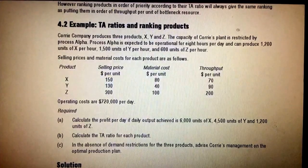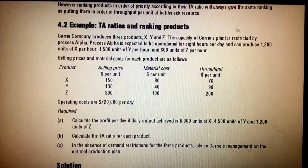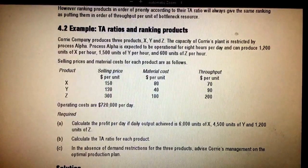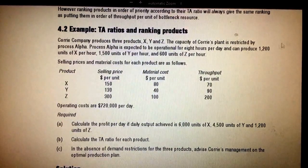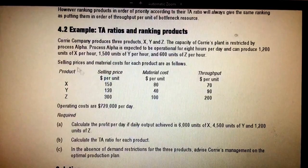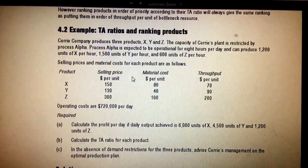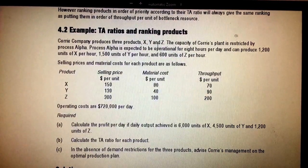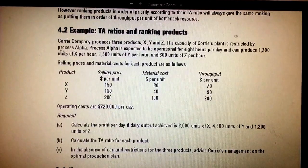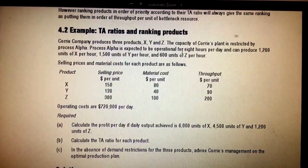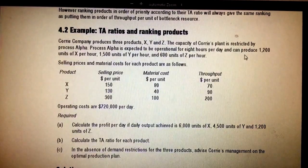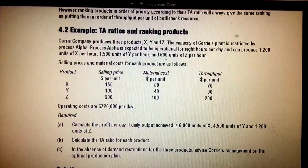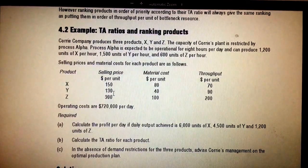Good afternoon. The purpose of this video is to explain how to calculate the throughput accounting ratio and rank products on the basis of the highest throughput accounting ratio. Here is one example — doing more examples helps you understand the concept. Company Query produces three products X, Y, and Z. The company's plan is restricted by Process Alpha, which is expected to be operational for eight hours per day. It can produce 1,200 units of X, 1,500 units of Y per hour, and 600 units of Z.